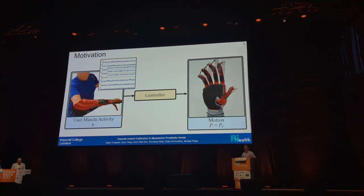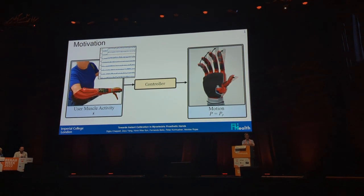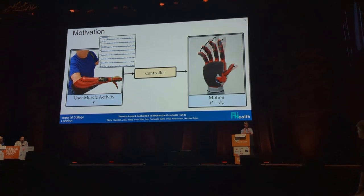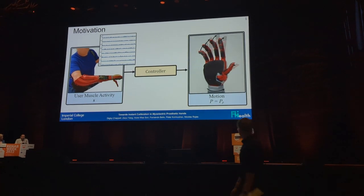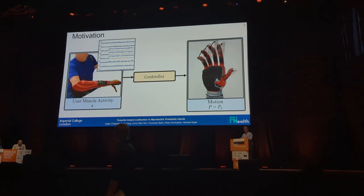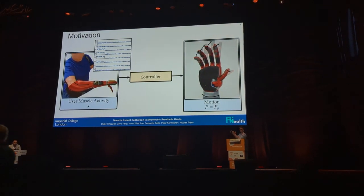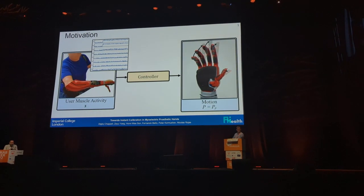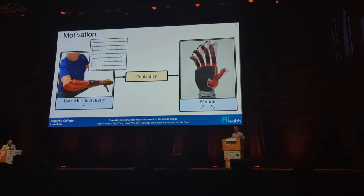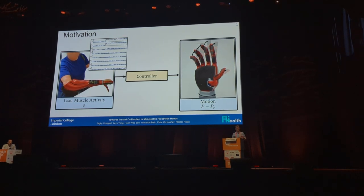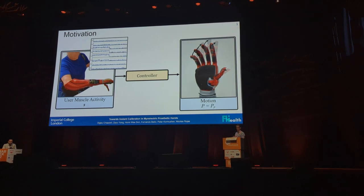Myoelectric prosthetic hands — you basically look at the muscle activity coming from someone's residual limb, run it through some sort of controller and convert it into the motion of the prosthetic hand. Typically, myoelectric prosthetic hands are done with discrete controls, so you're trying to recognize some sort of pattern of muscle activity and convert it to a discrete motion.